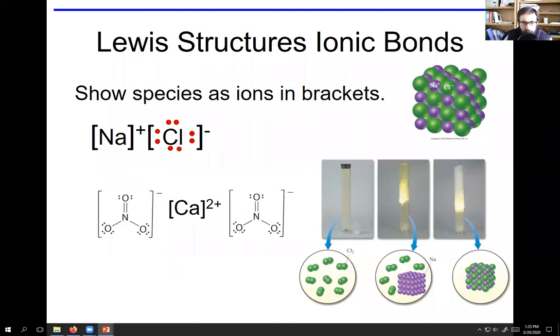Chlorine started out with seven valence electrons. Here it has eight valence electrons. Sodium started out with one valence electron. It gave that electron to chlorine, hence has zero. And that's an extended solid, an ionic compound that exists as a lattice.